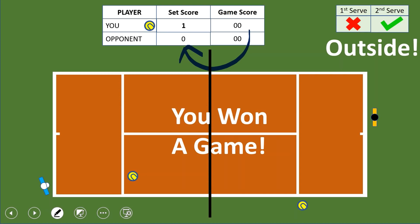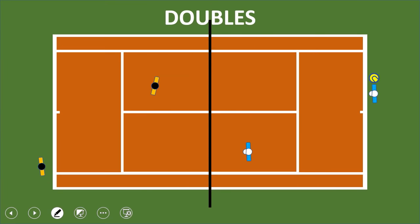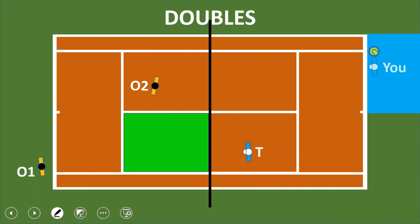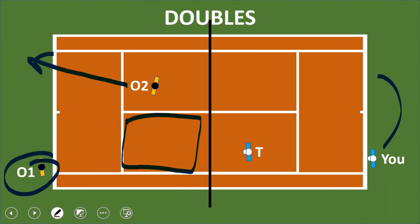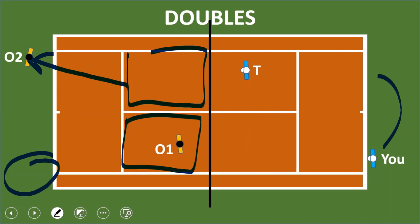Now let's talk about doubles. There are four players: you, your teammate, opponent one, and opponent two. Just like in singles, you stand to the right-hand side of the center mark for the first point and serve from the blue area into the green service box — but in doubles you get an extra wider area. After winning the first point you switch sides. Since opponent one was receiving, opponent two goes back to receive in the other service block. In the second point you serve into the other green block, and that's the basic flow of doubles.